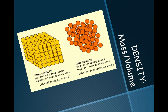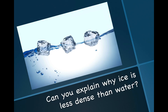The figure on the left represents something with high density — the particles are packed closely together with not much space between them. The figure on the right represents something with low density — the particles are loosely packed with more space between them. Can you explain why ice is less dense than water? On your notes, draw a picture to determine why ice is less dense than water.